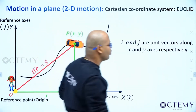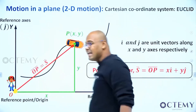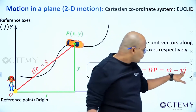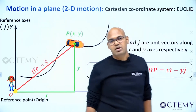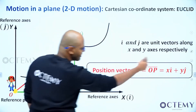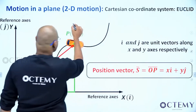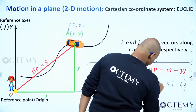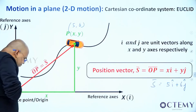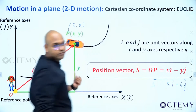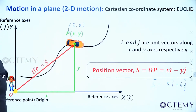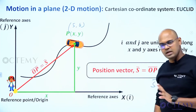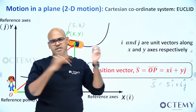Going x units along i-cap and y units along j-cap, we get the position vector OP-bar equal to x·i-cap plus y·j-cap. For example, if the point is 5 comma 6, the position vector is 5·i-cap plus 6·j-cap — meaning go 5 units in the i-cap direction then 6 units in the j-cap direction from the origin and you reach your point. Newton thus beautifully defined the position vector as x·i-cap plus y·j-cap.